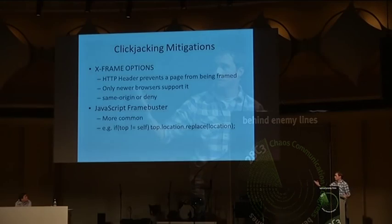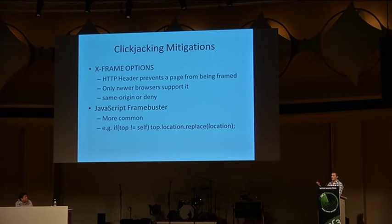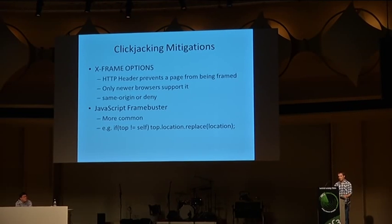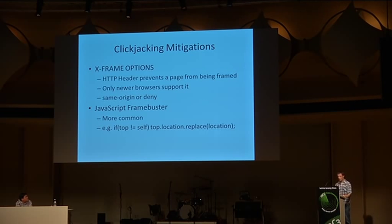The other solution is a JavaScript frame buster, and it might look something like this. This is a really bad one, but it says something like: if top does not equal self, top.location.replace location. It's a stupid frame buster script but it's easy to see what's going on — it's trying to prevent the page from being framed. JavaScript solutions are way more common than X-Frame-Options, and they kind of don't have the same limitations. All browsers support it, so it's a tempting solution — theoretically one solution to rule them all.